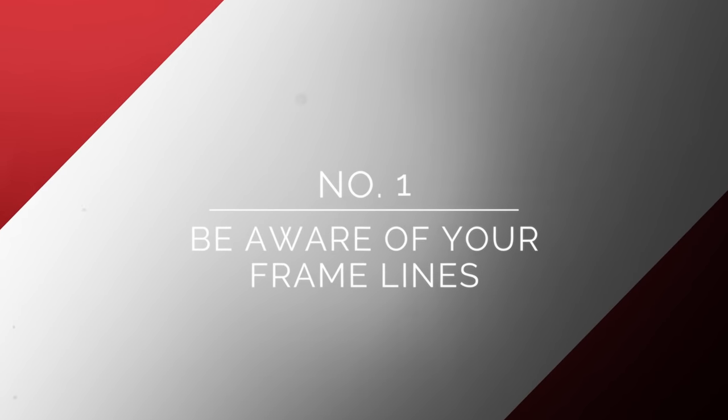The first method for hiding lights when lighting your one-er, what is that? So the first method would be using your frame lines. Just being familiar with where's the top of your frame line, where's the bottom of your frame line, and if pertinent, your left and right if you're not doing any crazy 360 moves.